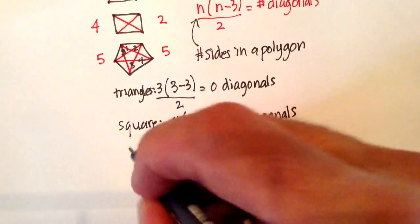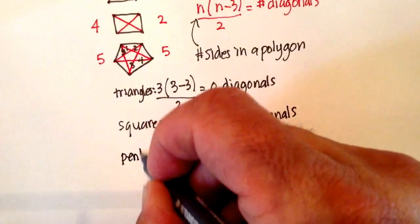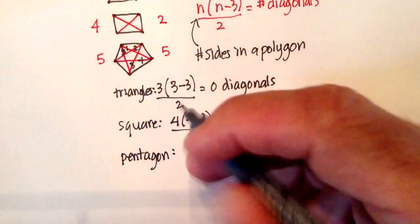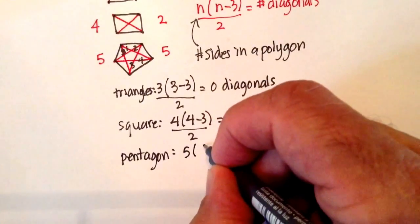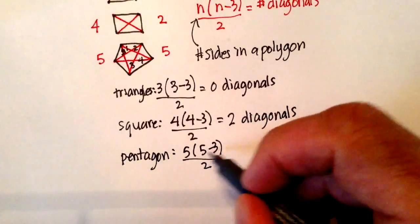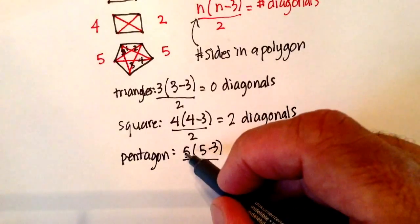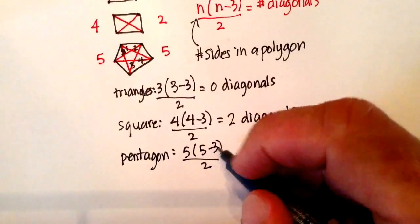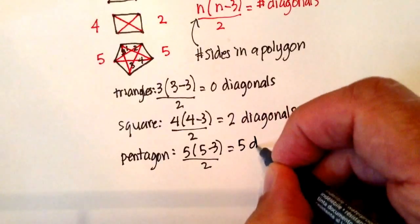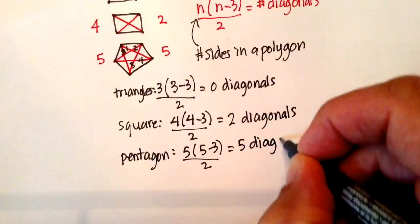Let's try it with the pentagon now. Looks like we might have a good formula. So 5 sides: 5 times 5 minus 3 over 2. 5 minus 3 is 2. 5 times 2 is 10. 10 divided by 2 is 5 diagonals. Yep, looks like it's working pretty well.